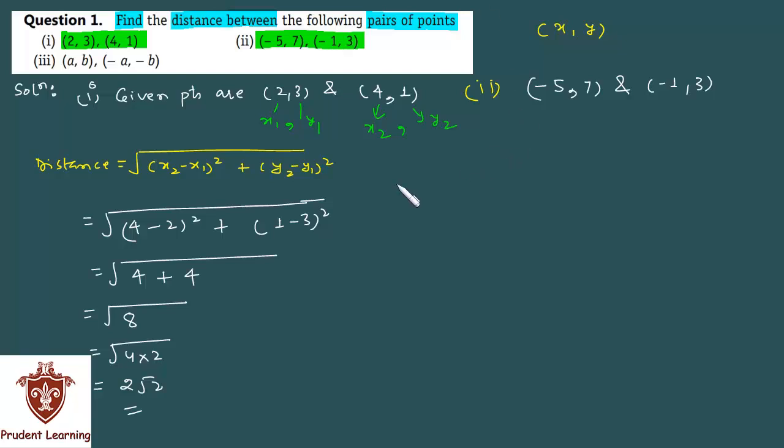Again, the distance formula is the same. And I am assuming this as the first point. So minus 5 is your x1, 7 is your y1. Likewise, minus 1 is your x2, 3 is your y2. Substituting the values in the formula, we have distance equals under root of.